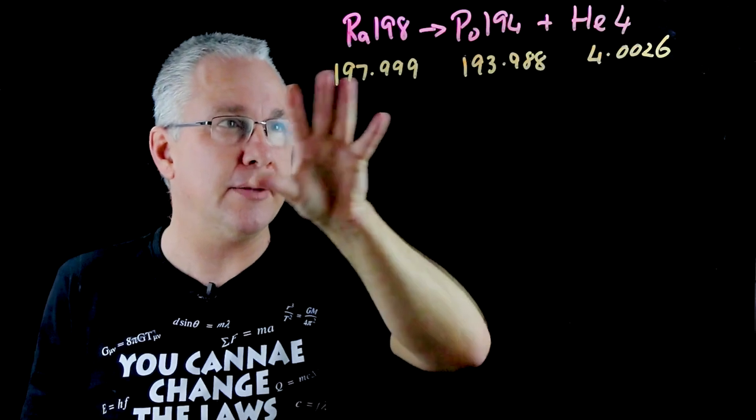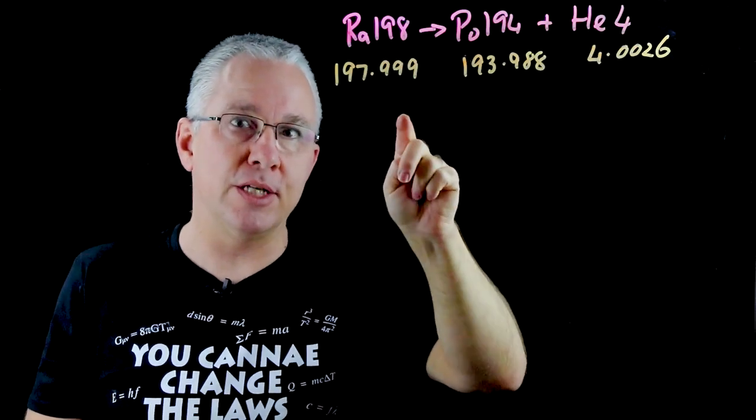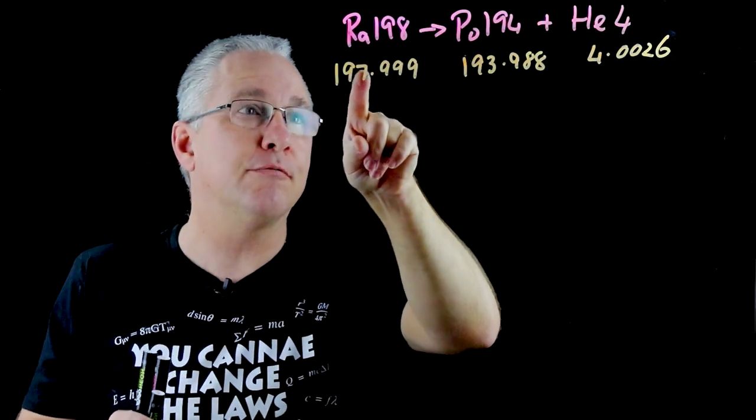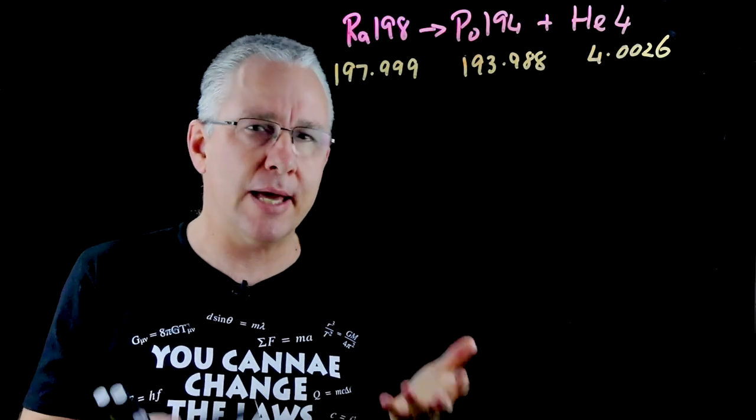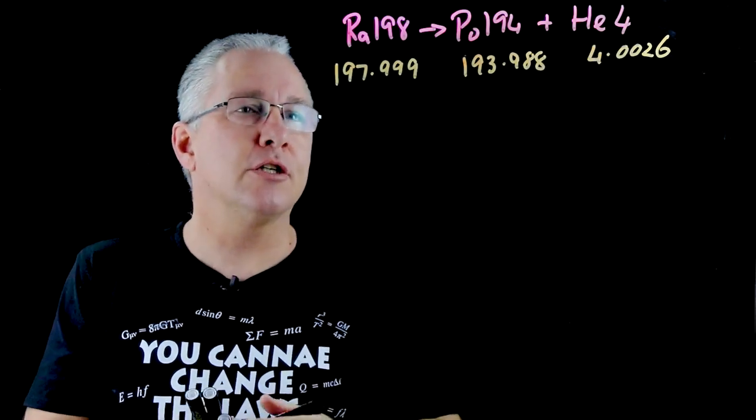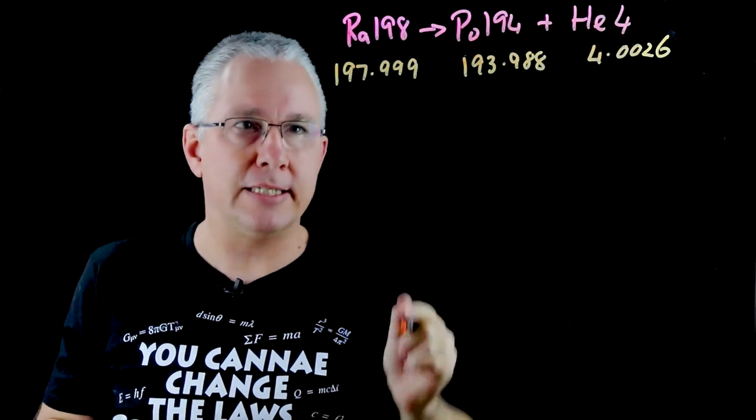That is we are losing some energy here and that energy is what is responsible for the kinetic energy of both the polonium and the helium nucleus as they fly apart during the alpha decay. Let's see if we can work that out. So the first thing we need to do is to work out what the mass defect is.